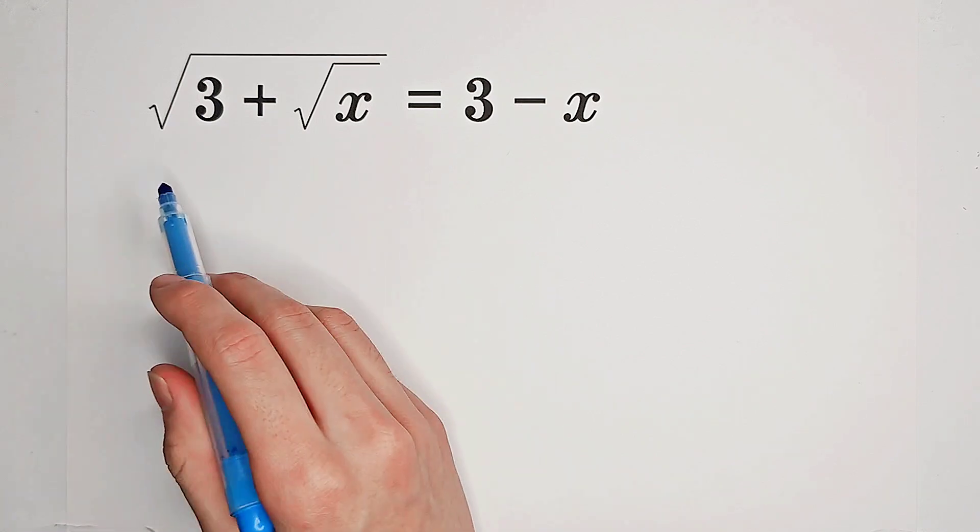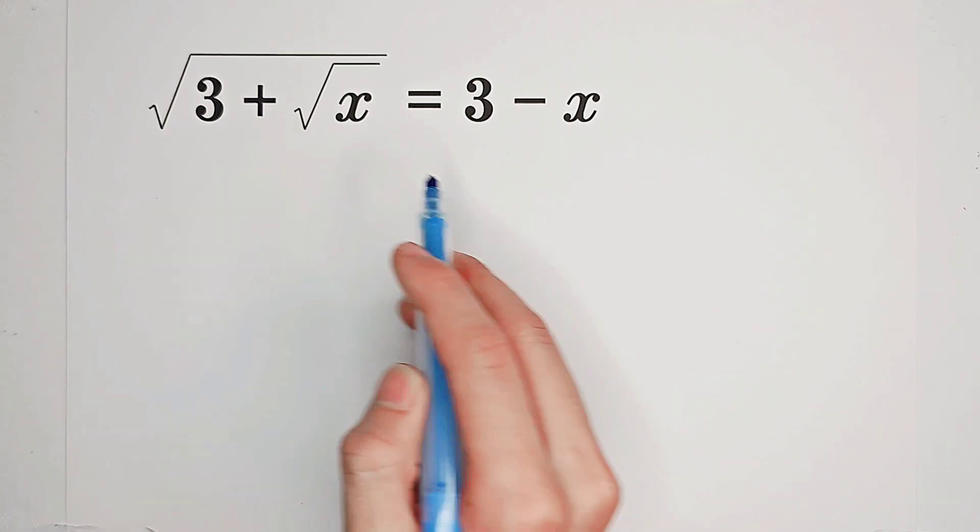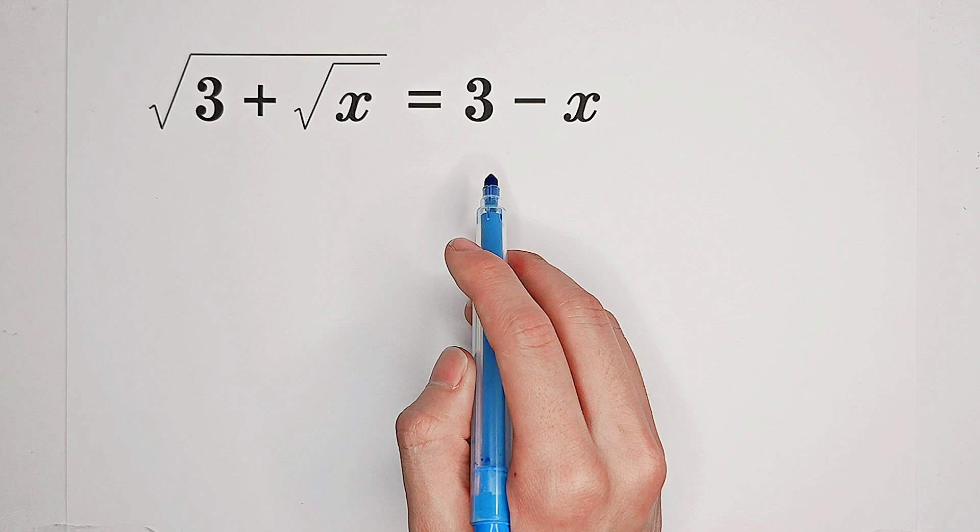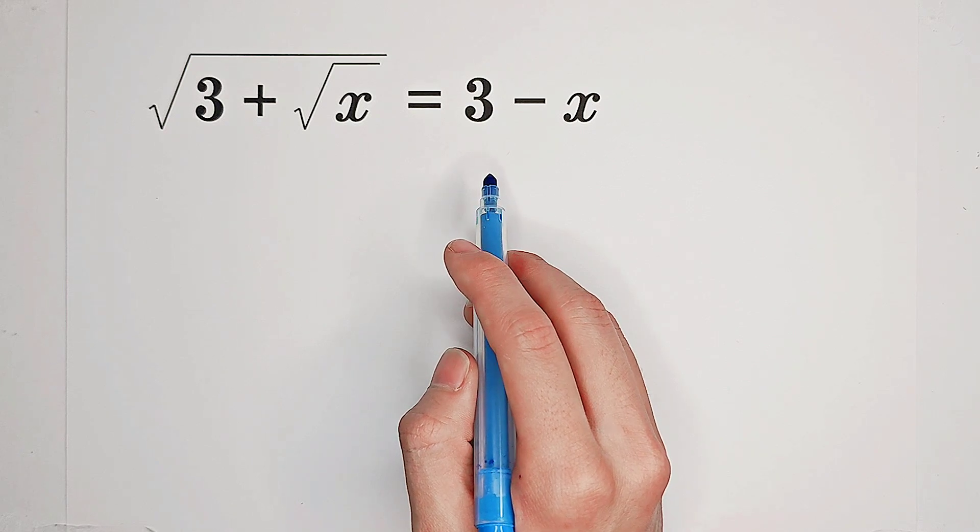Solve for x such that square root of 3 plus square root of x equals 3 minus x. Hmm, what shall we do?